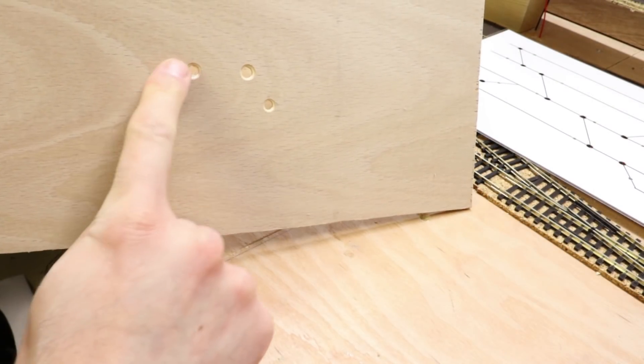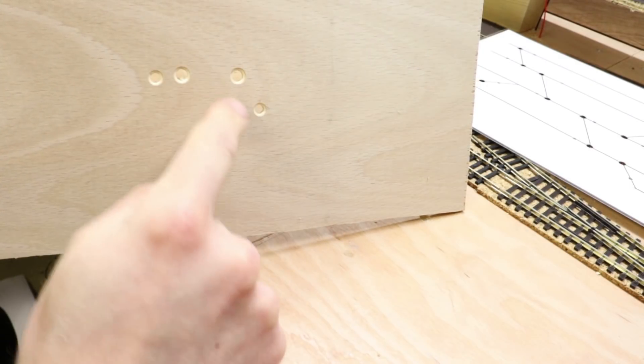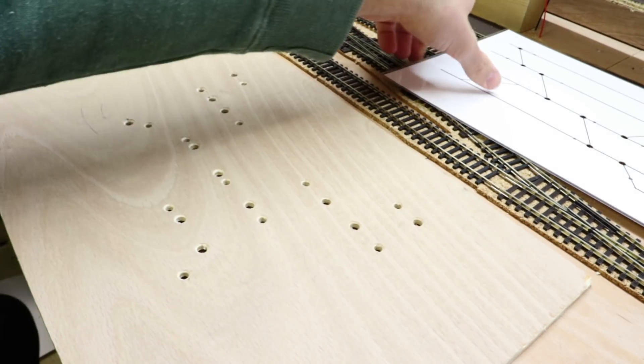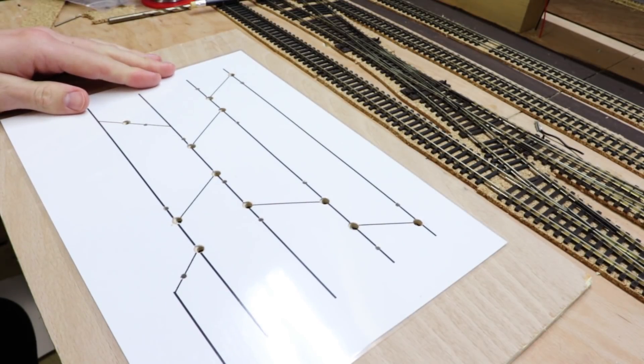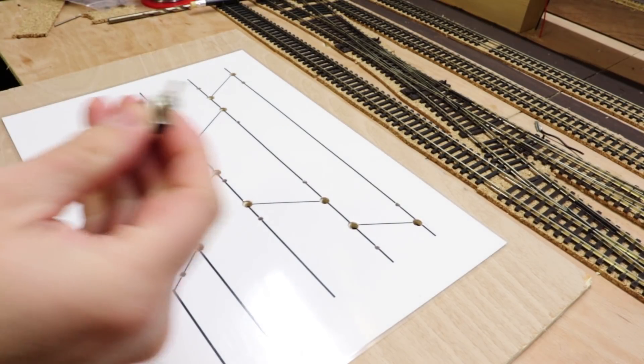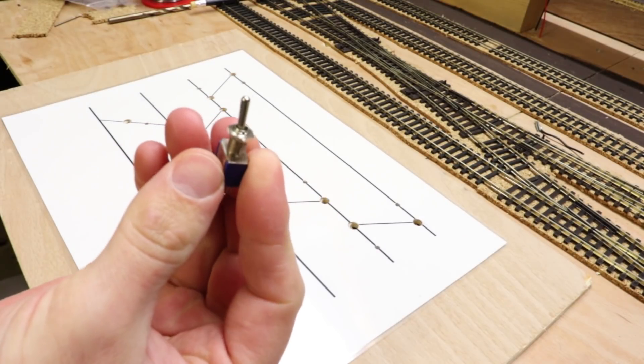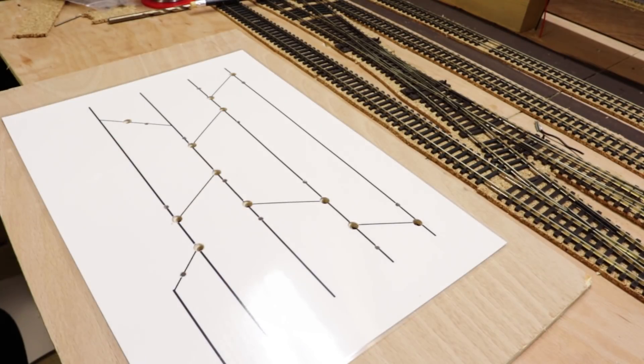So there we go, all the 6mm holes are drilled for the switches, and next to each one there's a 5mm hole for the LEDs. So I've lined that up over the top, and it all lines up pretty good. So that's brilliant. Now I'm going to fix all of these, there's 12 of these to go in. I'll make a start on that.